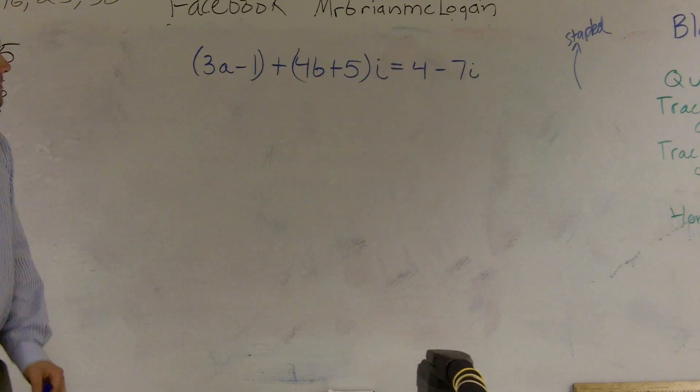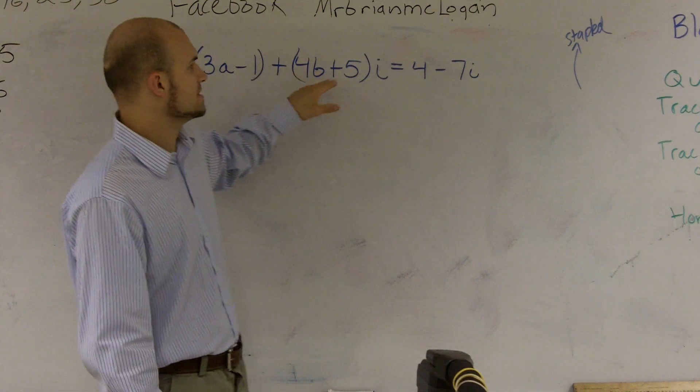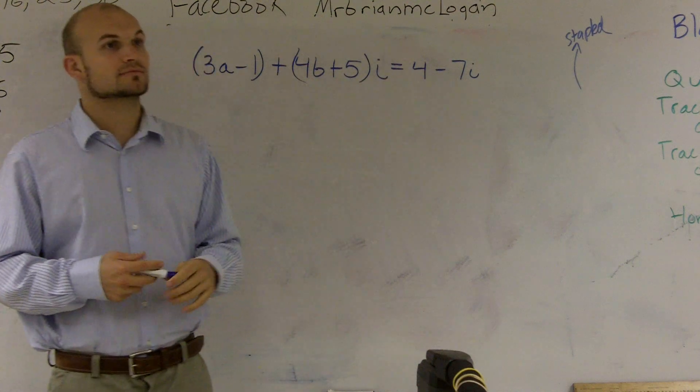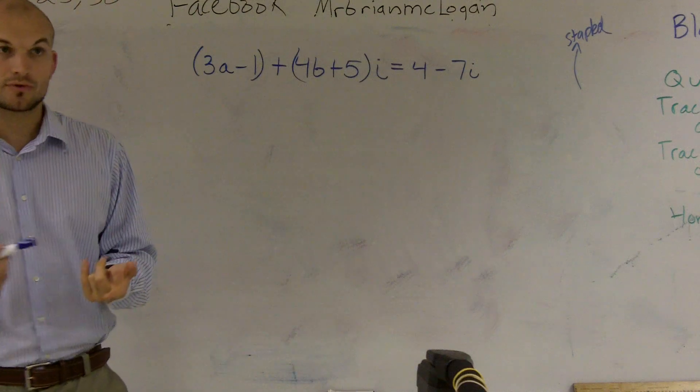So what we have is this equation: 3a minus 1 plus 4b plus 5 times i equals 4 minus 7i, right? And they want us to find the values of a and b that are going to make this true, correct?